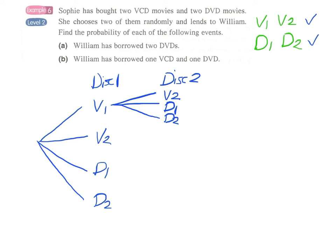And we can repeat this for the remaining three choices of disc one. If we have V2 as disc one then we have V1, D1, D2 three choices in disc two.